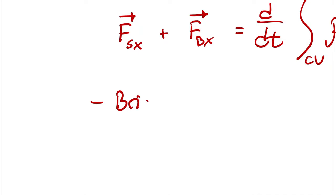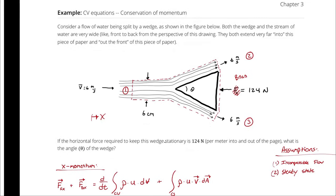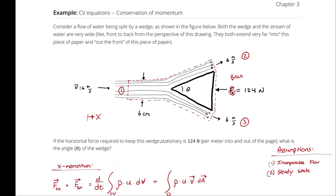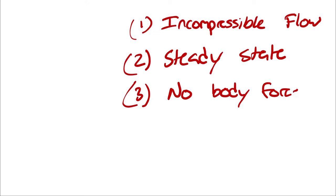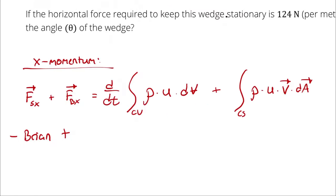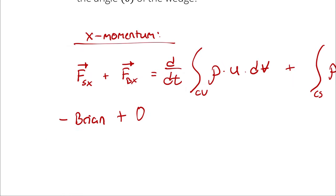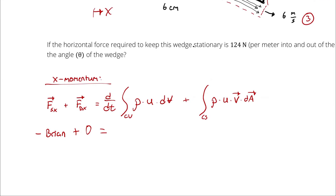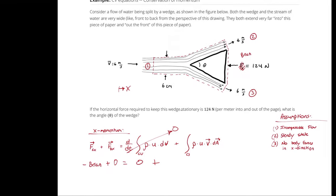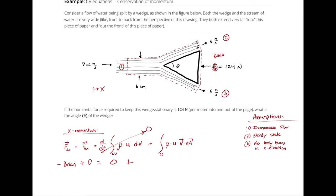So we have negative Brian. Do I have any body forces? The only body force we consider is gravitational acceleration, and I'm assuming gravity acts in the y-direction, so there are no body forces in the x-direction. Negative Brian plus zero equals the flux terms. Because I have steady-state analysis, the volume term disappears. There are three interfaces where water crosses the boundary in the x-direction: state 1, state 2, and state 3. So I'll write that out as three separate integrals.